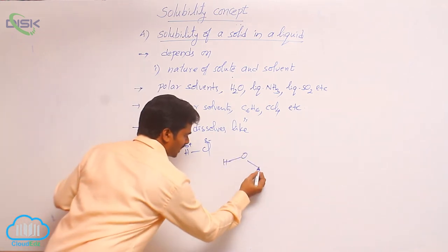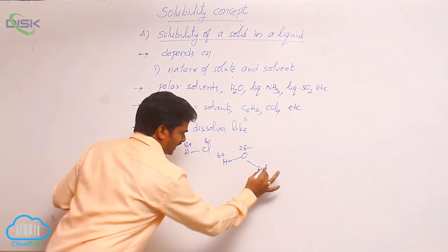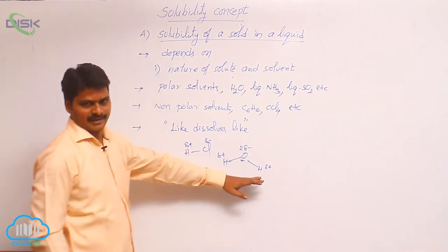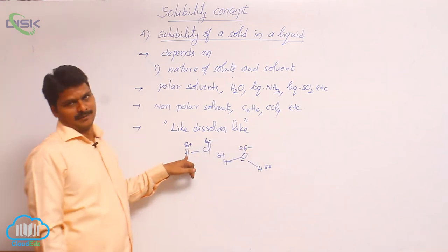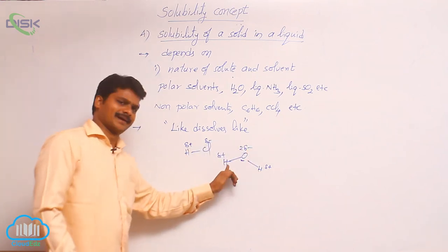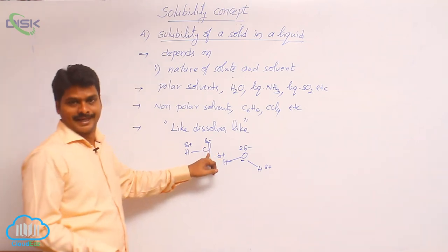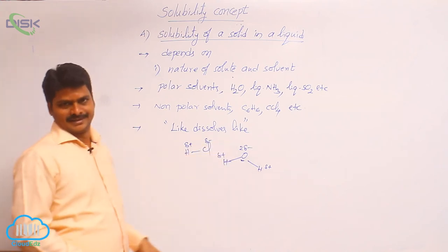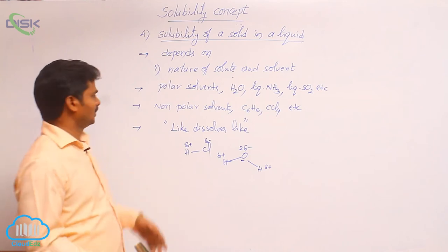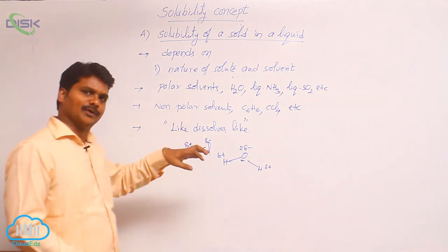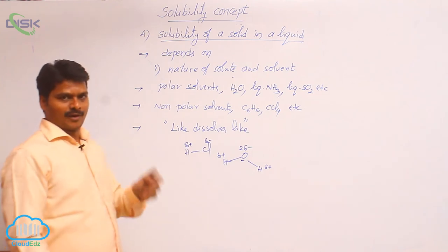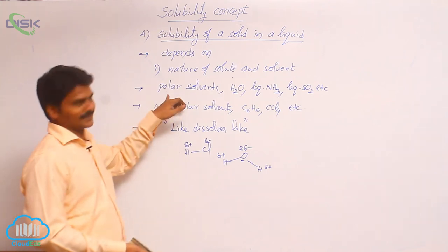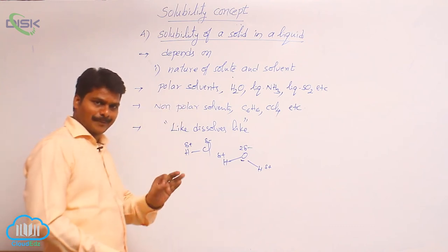When HCl dissolves in water, the negative poles of the solvent (water) attract the positive poles of the polar compound, and the positive poles of water attract the negative poles of the polar compound. This is how it dissolves. The reason for solubility of a polar compound in a polar solvent is dipole-dipole interaction. So solubility of HCl in water is due to dipole-dipole interaction.